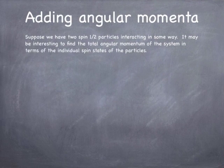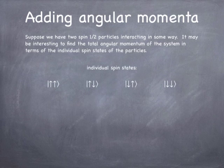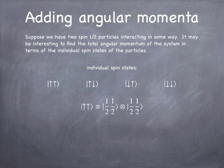Suppose we have two spin-1/2 particles and we want to know what the total spin of the system is. You can think of two spin-1/2 particles as having four possible combinations: both spin up; particle one spin up and particle two spin down; particle one spin down and particle two spin up; or both spin down. That 'x with a circle around it' is called the direct product operator — it means we have two particles and any given state is a combination of the states of the two particles.